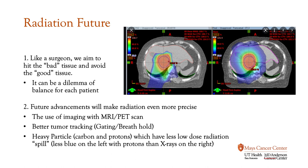For the future of radiation, we are continuing to look at different types of equipment to minimize the low-dose radiation spill, seen in blue here on the right. Techniques such as using MRI guidance, PET scans, and even protons can help us achieve a sharper dose fall-off to target the tumor. I hope that was a helpful introduction to the modalities of radiation therapy. Here at the Mays Cancer Team, we work in a multidisciplinary fashion to help our patients.